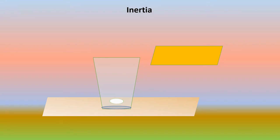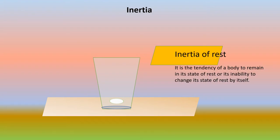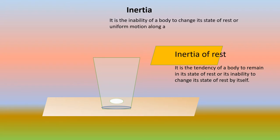So what is inertia of rest? It is the tendency of a body to remain in its state of rest, or its inability to change its state of rest by itself. And what is inertia? It is the inability of a body to change its state of rest or uniform motion along a straight line by itself.